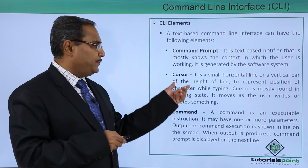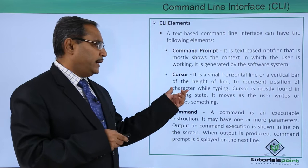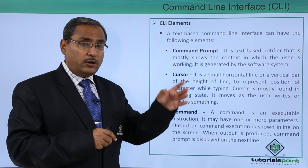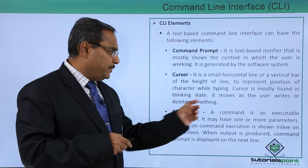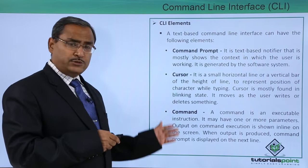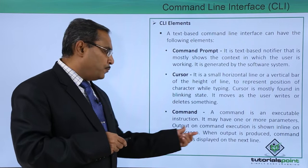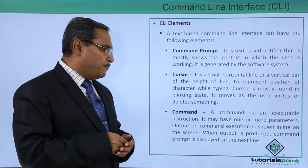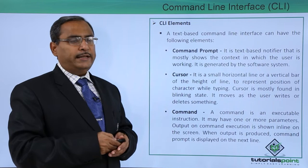The next element is the cursor — a small horizontal line or vertical bar of the height of the line, representing the position of the character while typing. The cursor is mostly found in a blinking state to grab the attention of the user, and it moves as the user writes or deletes something. Next is the command itself — an executable instruction that may have one or more parameters. Output on command execution is shown inline on the screen, and when output is produced, the command prompt is displayed on the next line.